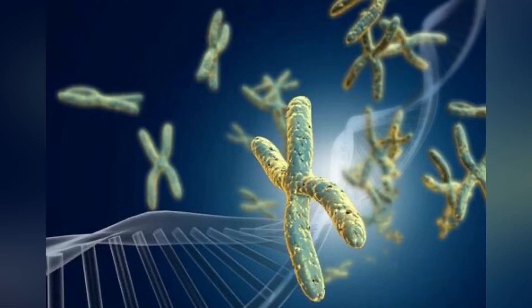Deacetylation performed by HDAC molecules has the opposite effect. By deacetylating the histone tails, the DNA becomes more tightly wrapped around the histone cores, making it harder for transcription factors to bind to the DNA. This leads to decreased levels of gene expression and is known as gene silencing.